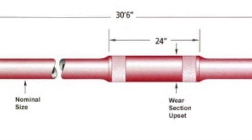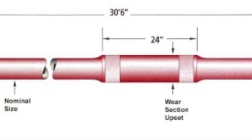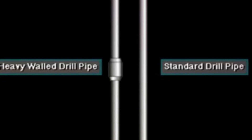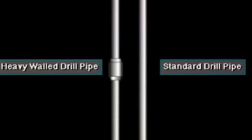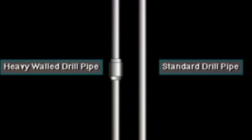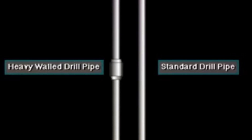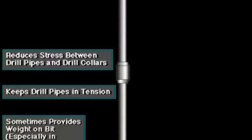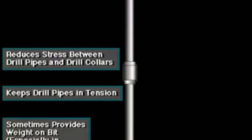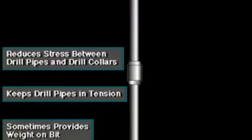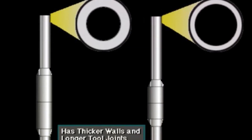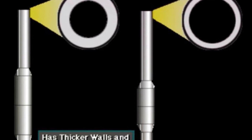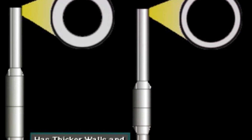The practice of using heavyweight drill pipe (HWDP) in the drilling industry has gained wide acceptance. These pipes usually have a greater wall thickness than regular drill pipes and are commonly utilized at the bottom of the drill pipe where there is a high stress concentration. Considering the number of pipe joints that should be run in the transition zone is crucial. Based on successful field experience, using a minimum of 18 to 21 joints of HWDP between the drill collars and the regular drill pipe in vertical holes is recommended.